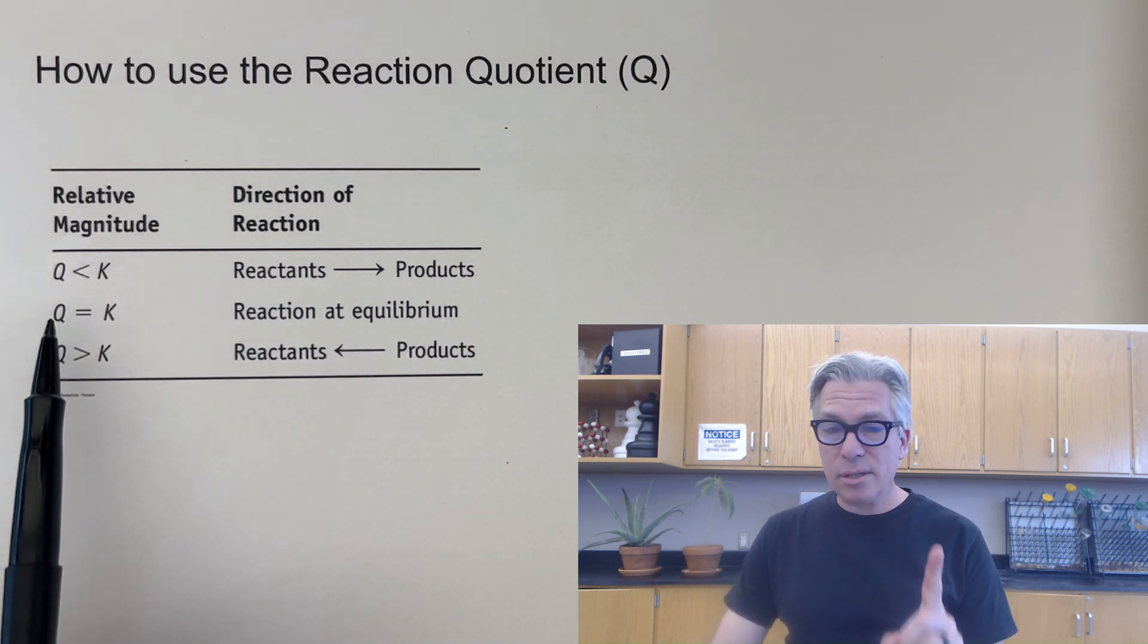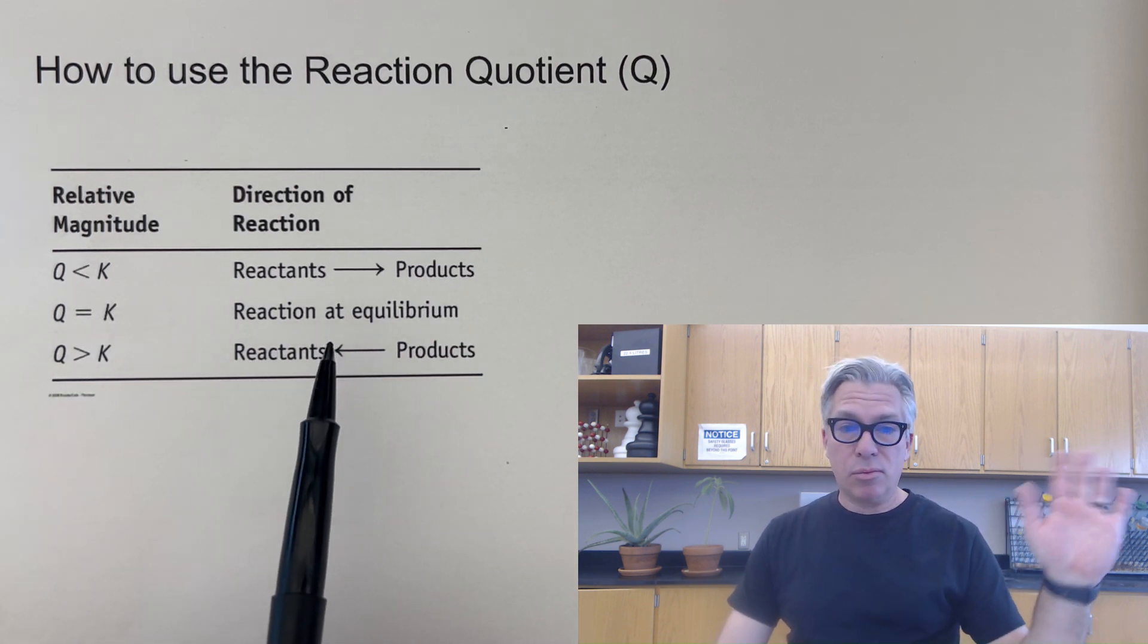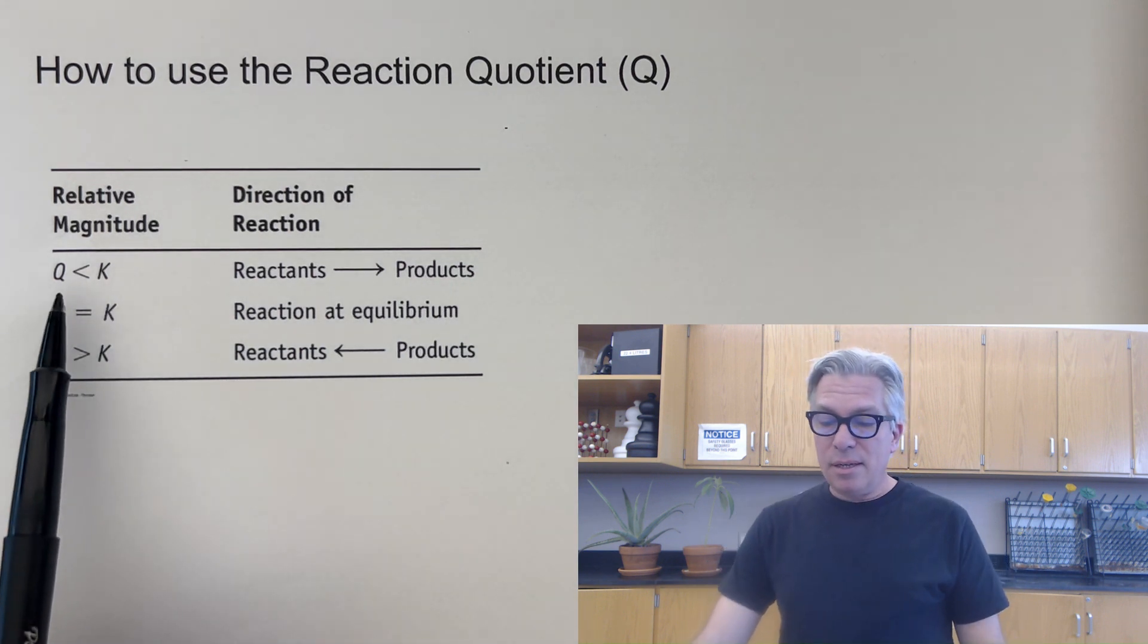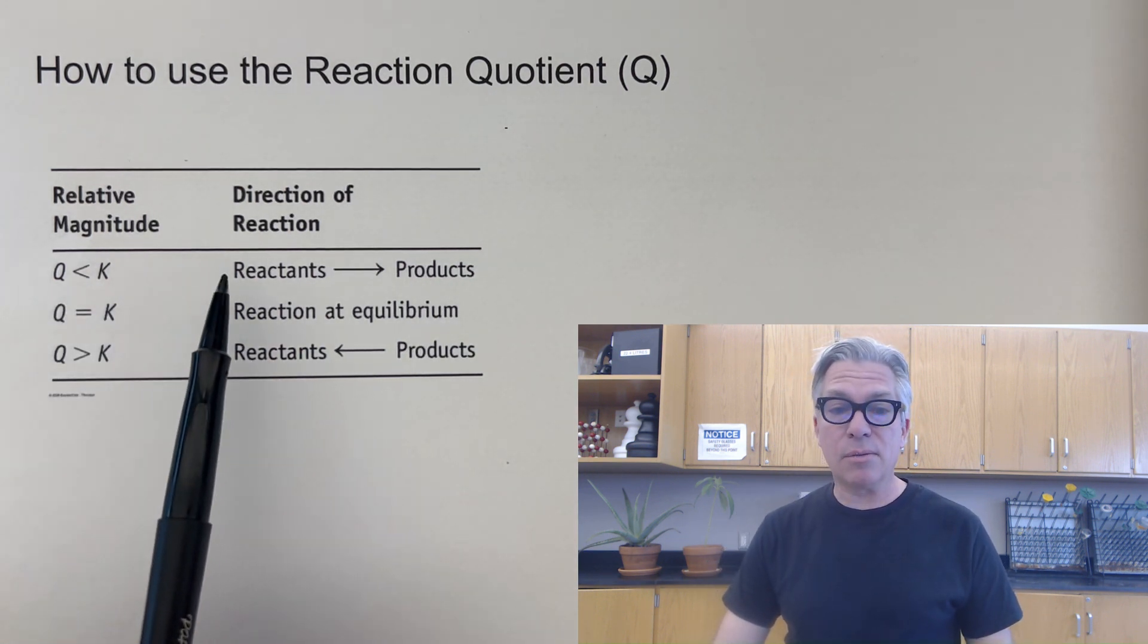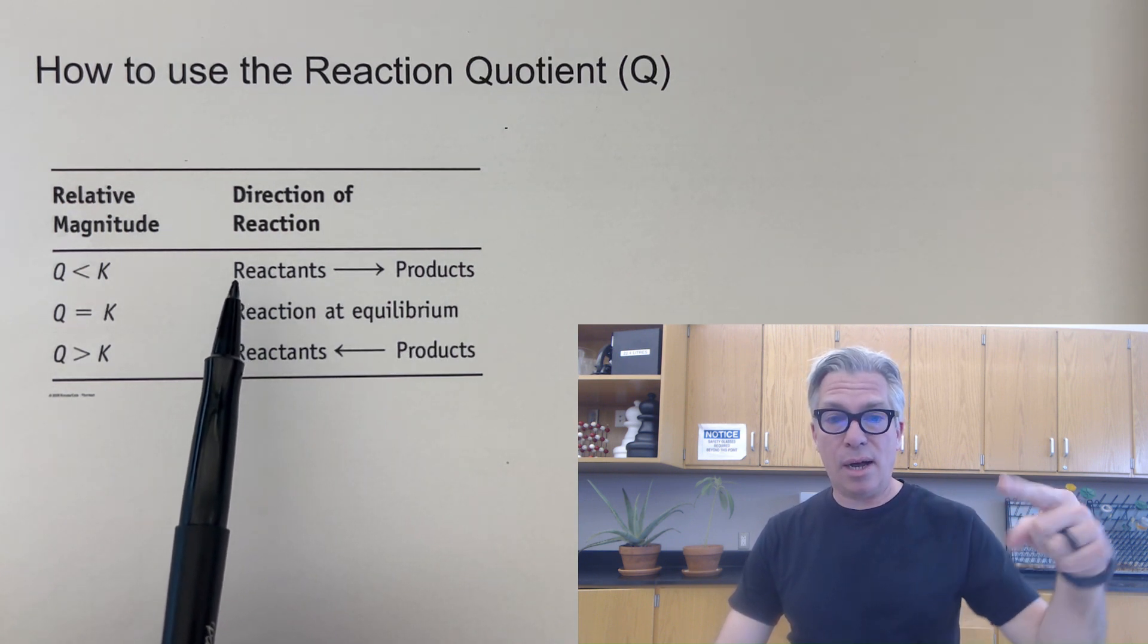If we find our current conditions equal K, then we know we're at equilibrium. And boom, we're done. No more work needs to be done. But if Q is less than K, then that means the reaction is still going toward equilibrium.